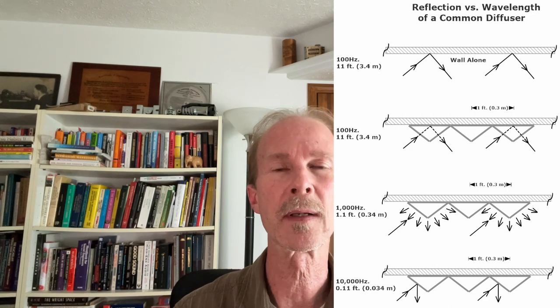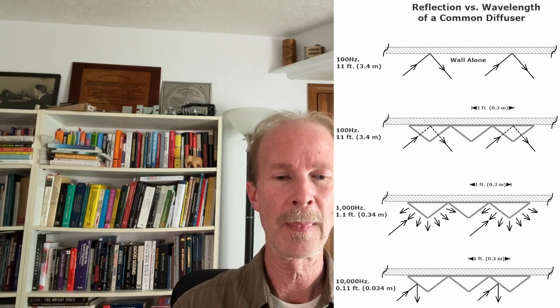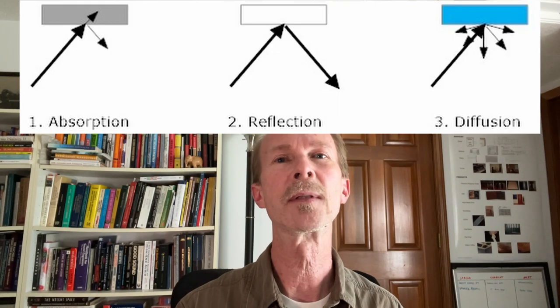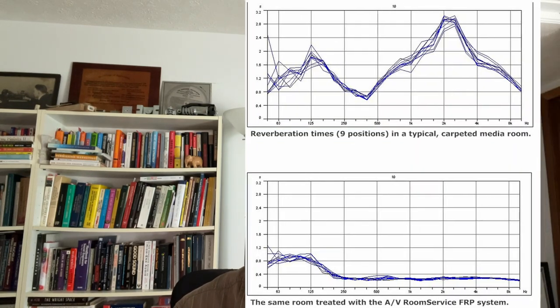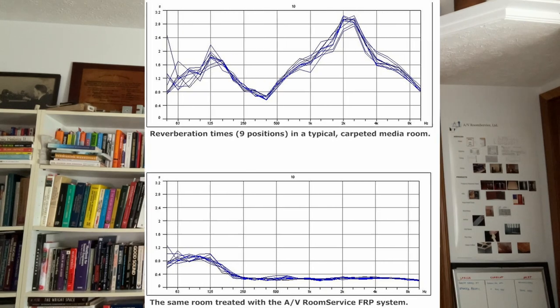There are different sizes too. If we're trying to deal with room modes we're talking about a deep panel. If we're talking about diffusion we're also probably talking about a deep panel. And then different quantities for different conditions. Essentially, with the internal surface area of a room, we have three tools: reflection, absorption, and diffusion.